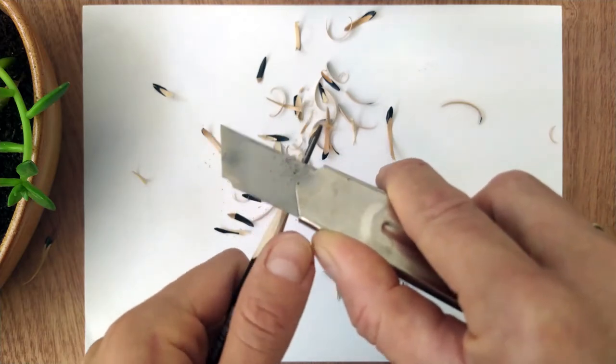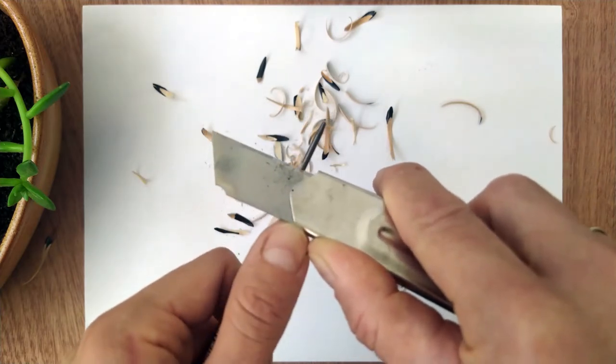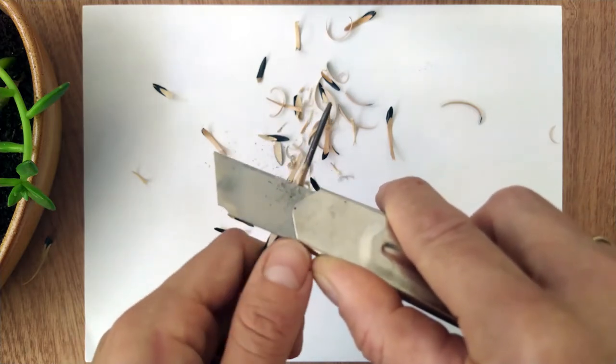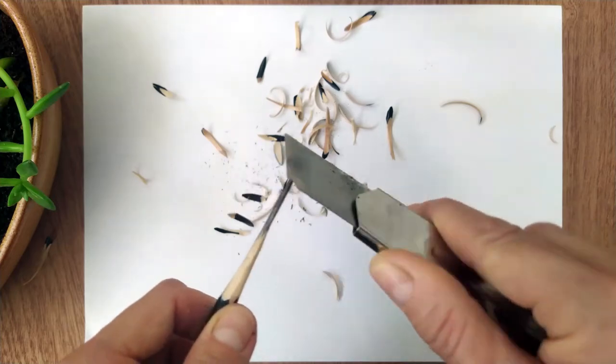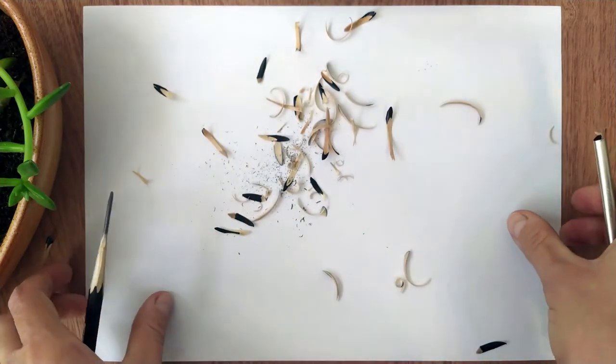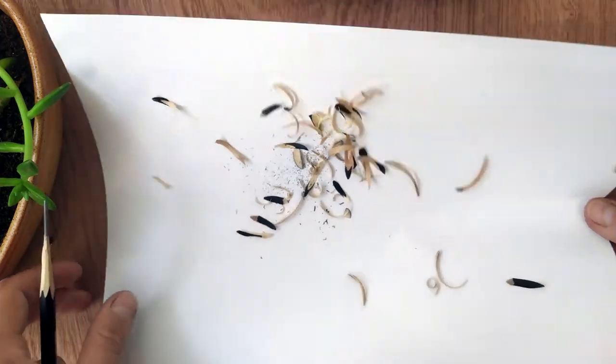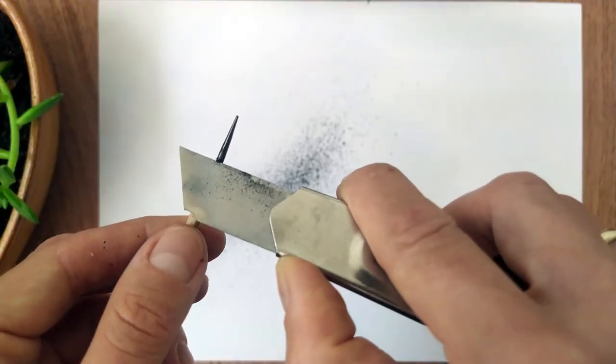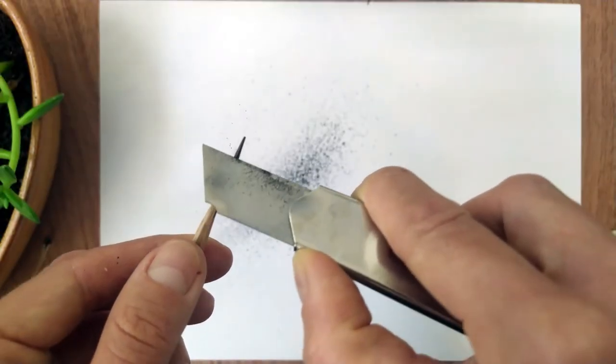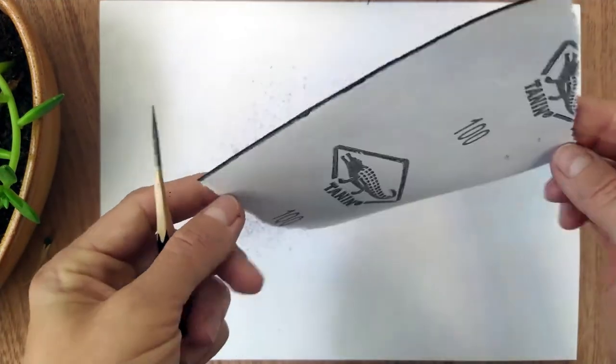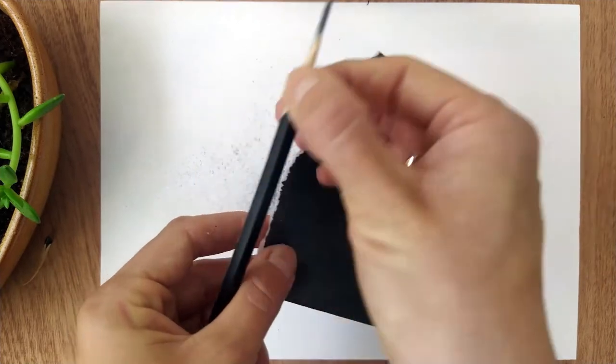Once you have freed and exposed the desired length of the lead from the wood, you can proceed to sand the tip of the lead itself. This can be done with light sliding movements with the knife. Wood shavings can be removed so that in the future it would be easy to collect lead dust. You can also use sandpaper to sand the lead.